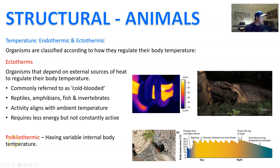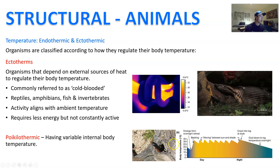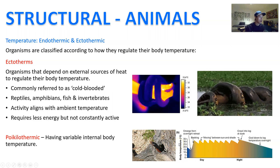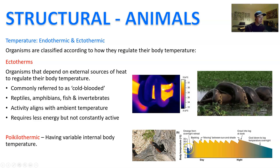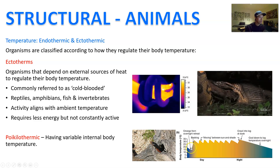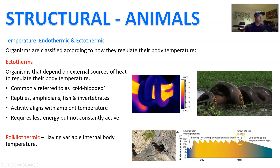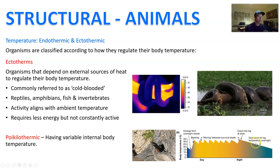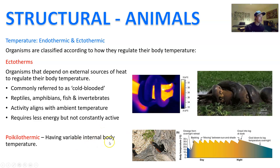Another term for a lot of ectotherms is poikilothermic — the opposite of homeothermic — meaning they have variable internal temperature that goes up and down coinciding with the environment. Here's a red-bellied black snake: you can see the time of day and night and the body temperature of the snake. When dawn happens, they emerge from their overnight burrows and bask to warm up, then make in-and-out movements between sun and shade to regulate temperature. At nighttime they go back into their burrow, cool down, and the cycle resets every day.